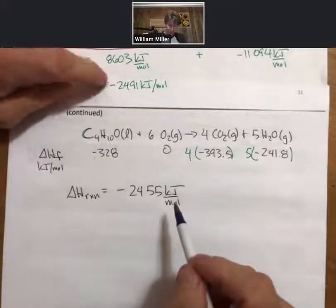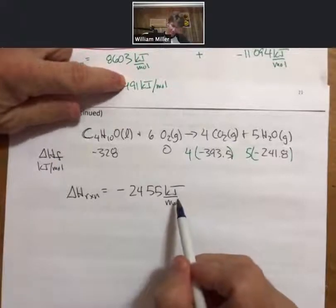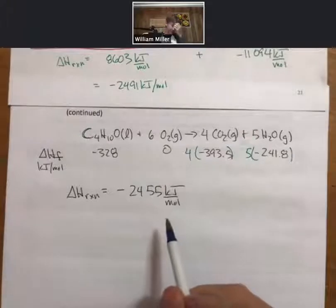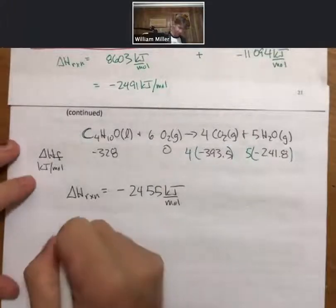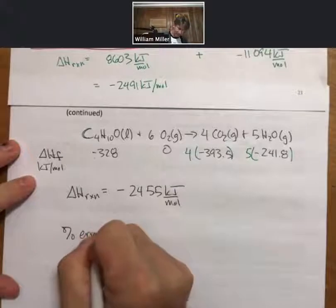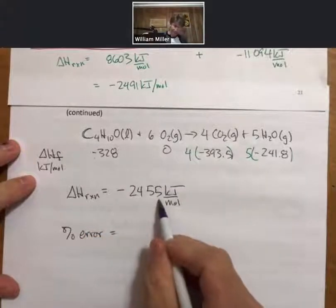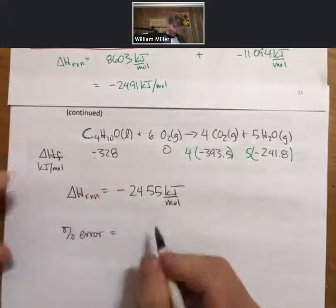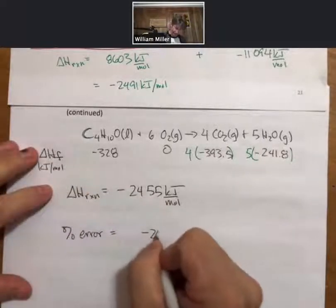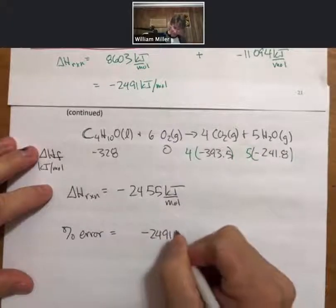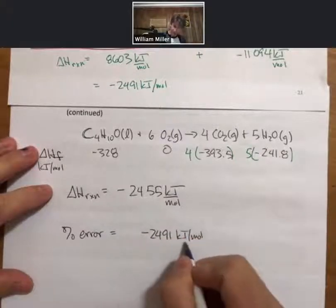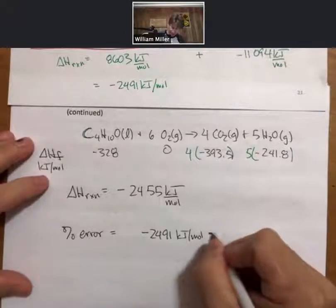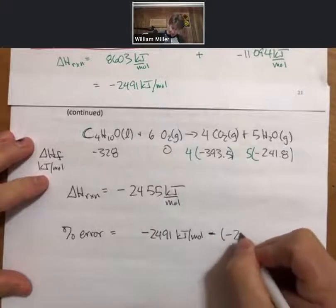That's compared to minus 2,491, which on the face of it you're off by a little less than 40 kilojoules per mole. But if we do a percent error using the ΔHf value or the ΔHf derived value as our correct number: minus 2,491, which is our experimental—yeah, it's our different technique—minus minus 2,455 over minus 2,455.